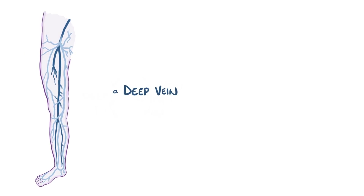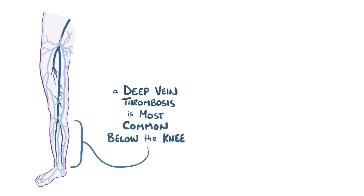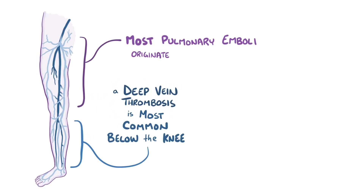A deep vein thrombosis most commonly develops in the lower legs, below the knee, although a blood clot can form in both superficial and deep veins, and also in other parts of the body as well. In fact, in the case of pulmonary embolisms, it's thought that most pulmonary emboli originate from leg veins above the knee.